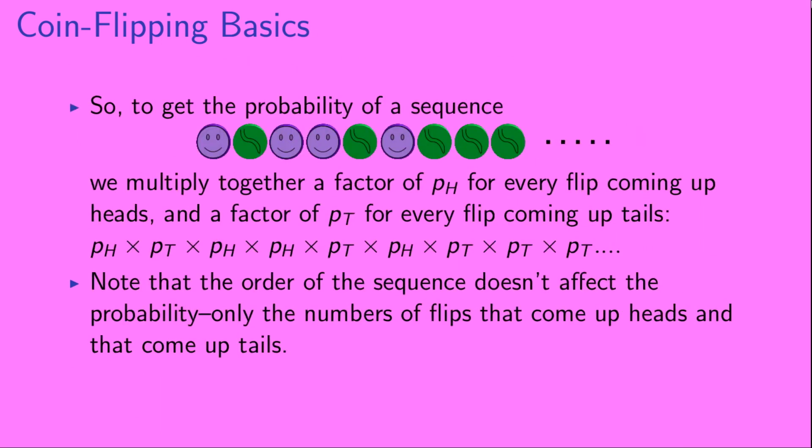So to get the probability of a sequence, we multiply together a factor of pH for every flip coming up heads, and a factor of PT for every flip coming up tails. So for this sequence that starts heads, tails, heads, heads, we would write down a product that begins pH, PT, pH, pH.